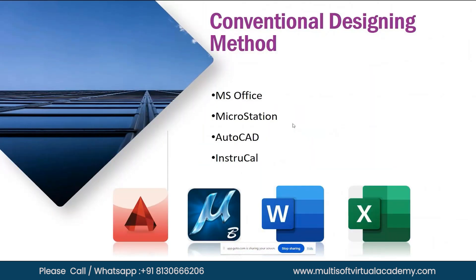We all know what EPC is. EPC companies: E stands for Engineering, P stands for Procurement, C stands for Construction and Commissioning. If you take any kind of project — refinery projects, power plant projects — EPC stages will be involved. Engineering needs to be completed first, then procurement starts, and once procurement is complete, construction and commissioning will start.